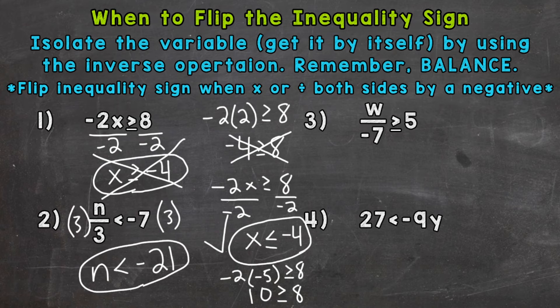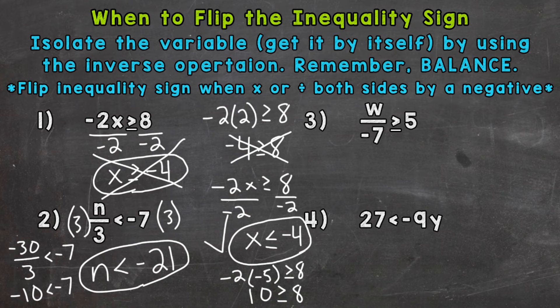Anything less than negative 21 is a solution. Let's plug in negative 30 since it's compatible with dividing by 3. Negative 30 divided by 3 is negative 10, and negative 10 is less than negative 7 — that's true. So negative 30 is a solution, along with anything else less than negative 21. We did not need to flip the sign because we multiplied both sides by a positive number.